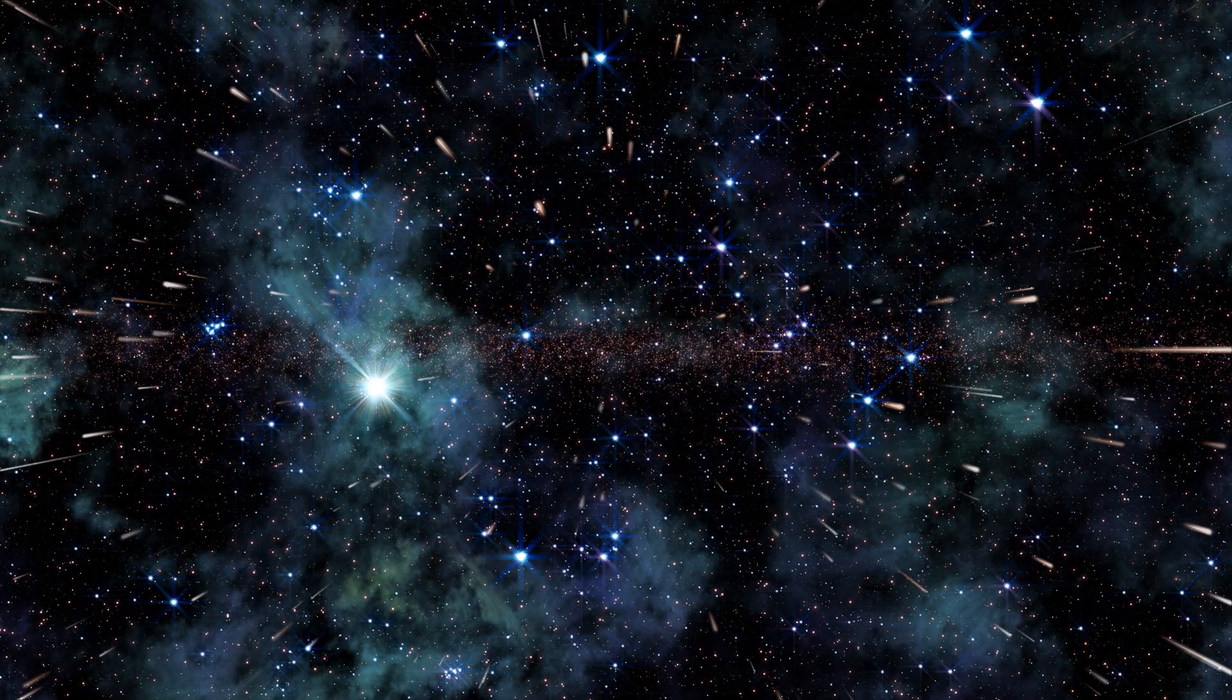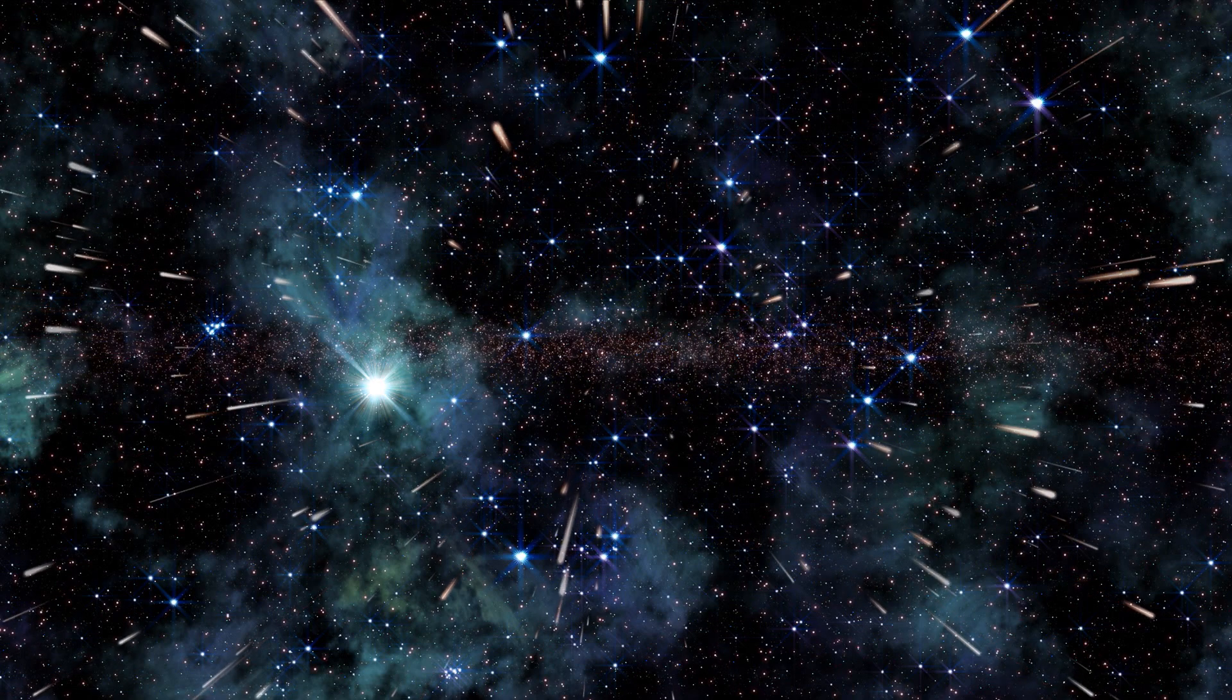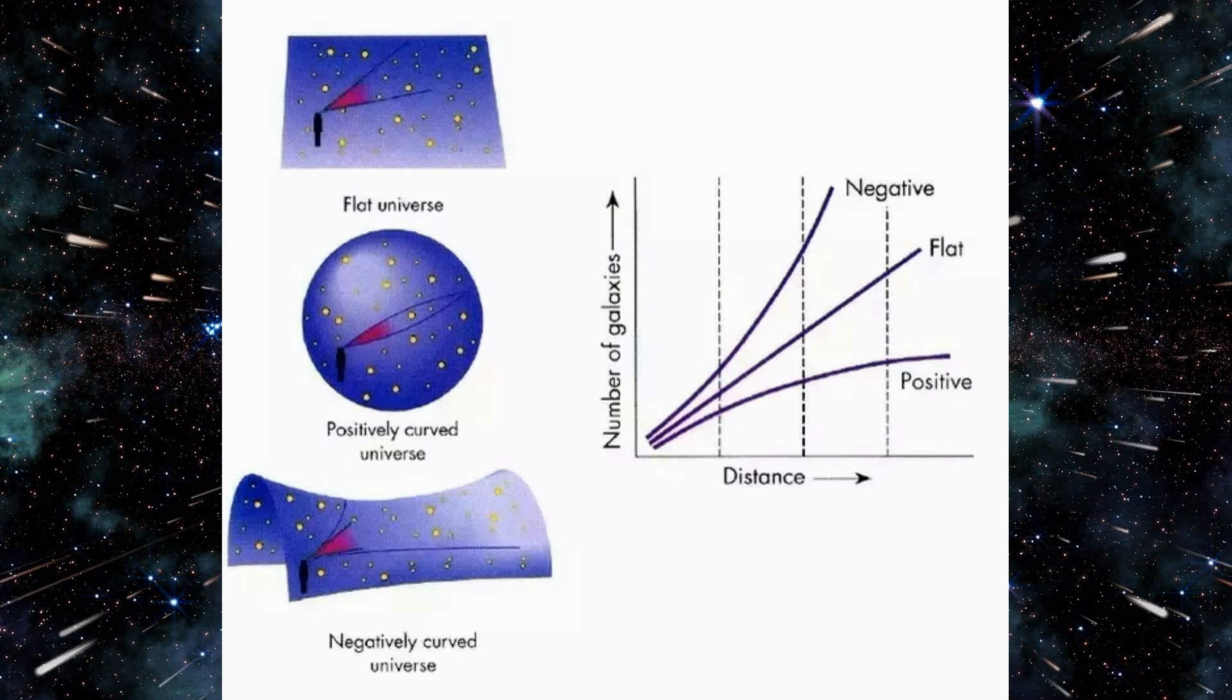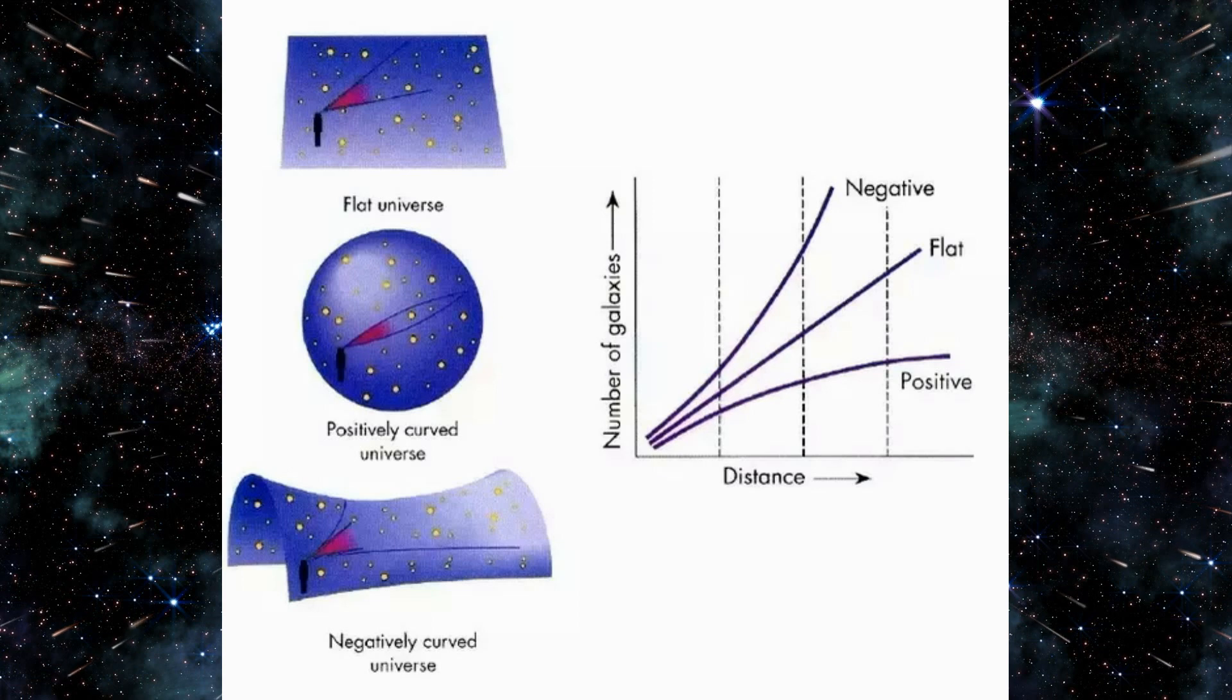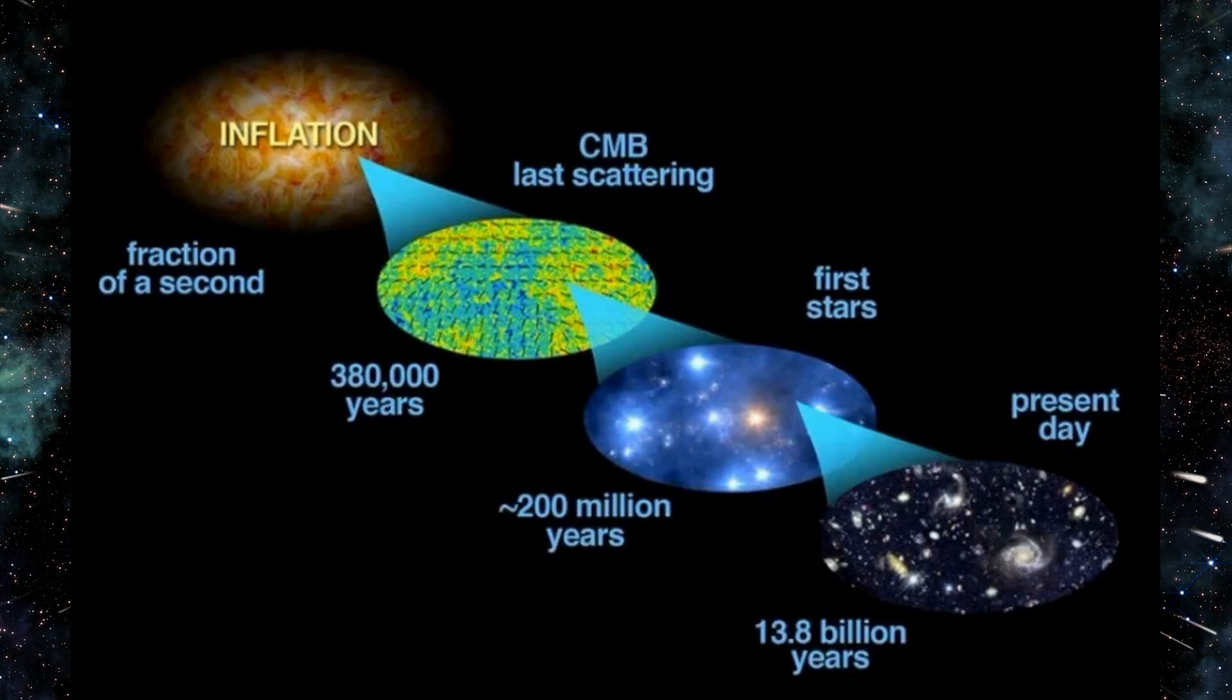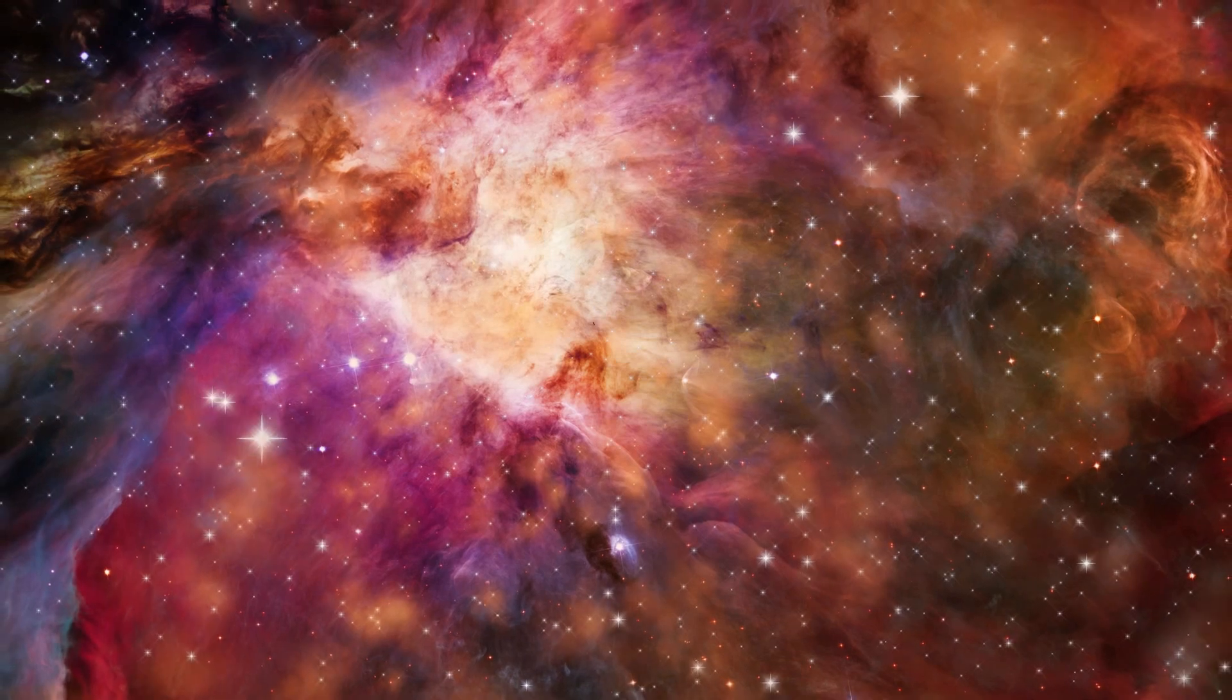Current observations and cosmological models suggest the universe might be infinite. Here's why. Flat geometry: measurements of the universe's curvature suggest it's relatively flat. If the universe were finite and curved in on itself like a sphere, it would have a positive curvature. An infinite universe, on the other hand, would tend towards flatness. Cosmic inflation: the prevailing theory of the Big Bang posits a period of rapid expansion in the universe's very early moments, called inflation. If inflation occurred infinitely in all directions, it could explain the vastness and uniformity of the observable universe.